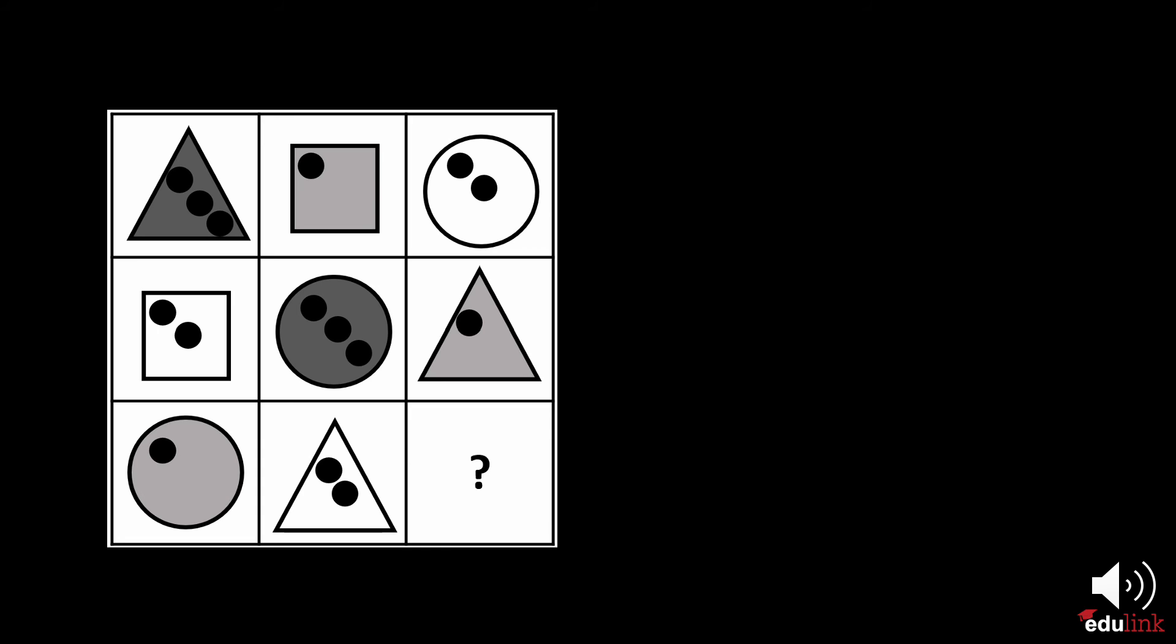And finally, the amount is also all different within each row and column. Can you predict what goes in the empty space? A dark square with three dots must go in the empty field.